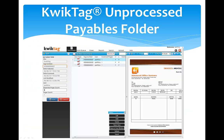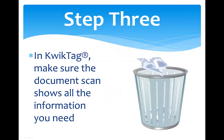You can scan and view documents in QuickTag from any location that has internet access, and the document can be accessed within Carillon ERP immediately afterwards. Next, pull up the voucher in QuickTag to make sure the document scan shows all of the information you need. After you verify this, you can dispose of the original paper or digital document.